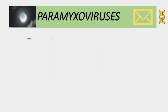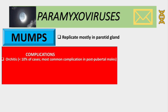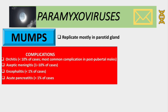The next virus is mumps. Mumps generally replicates in glands — specifically the salivary glands, most commonly the parotid gland, and it's usually bilateral. Complications include orchitis, aseptic meningitis, encephalitis, and acute pancreatitis. Orchitis occurs in less than 10% of cases, mostly in post-pubertal males, and bilateral orchitis carries a risk of infertility, though those cases are very rare.